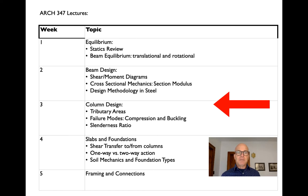So in our schedule for 347, we've done equilibrium, we've done beam design, we're now on column design. After column design, we'll look at the two end conditions: floor slabs that gather loads, foundations that spread them out. And then we'll very briefly look at framing connections, how all of these get welded together.